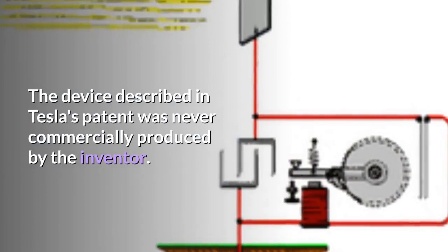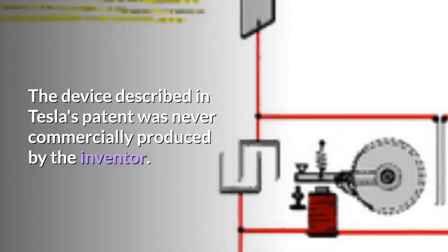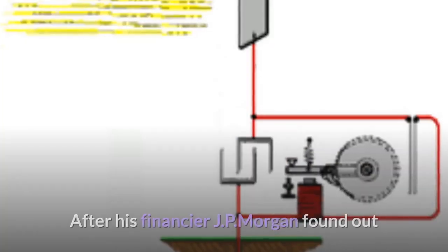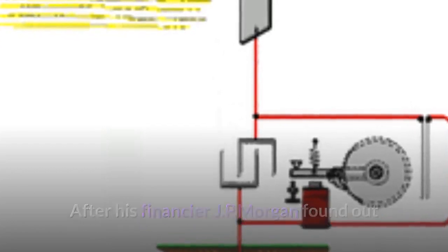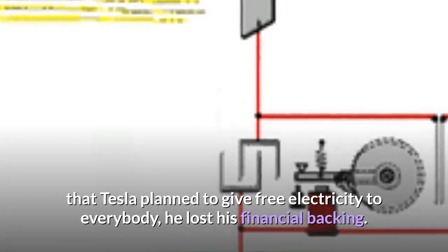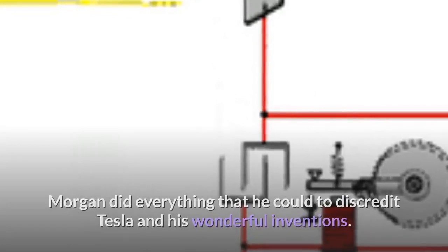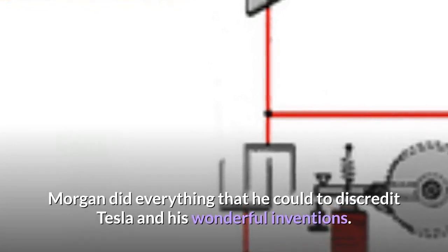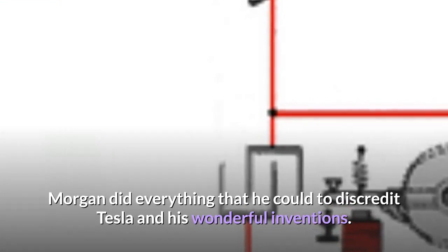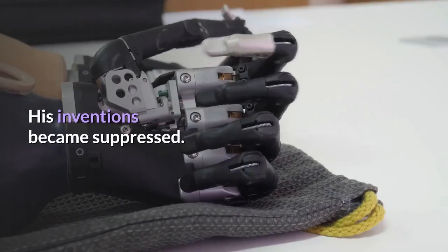The device described in Tesla's patent was never commercially produced by the inventor. After his financier JP Morgan found out that Tesla planned to give free electricity to everybody, he lost his financial backing. Morgan did everything that he could to discredit Tesla and his wonderful inventions. His inventions became suppressed.